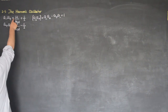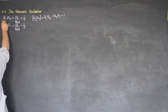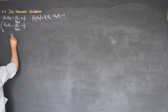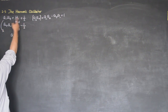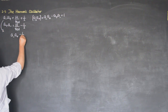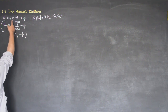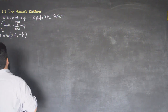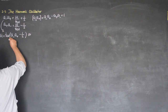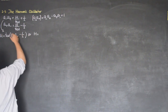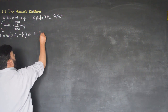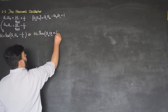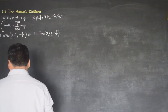From these results, the Hamiltonian can be written in two equivalent ways. Using a₋a₊: H = ℏω(a₋a₊ − 1/2). Using a₊a₋: H = ℏω(a₊a₋ + 1/2). Both representations are valid and we can choose whichever is convenient.